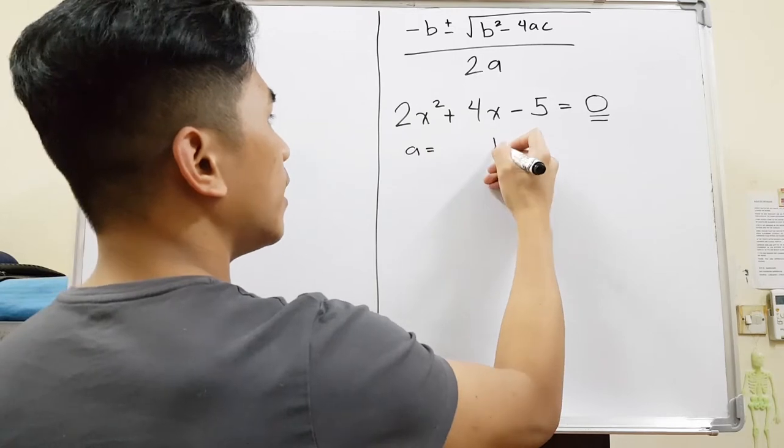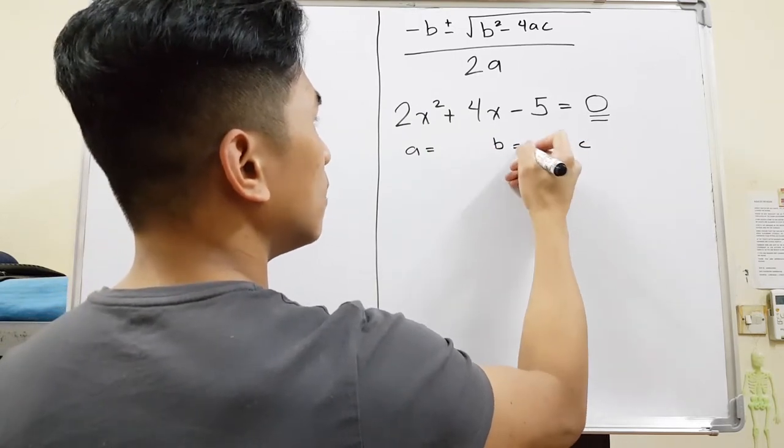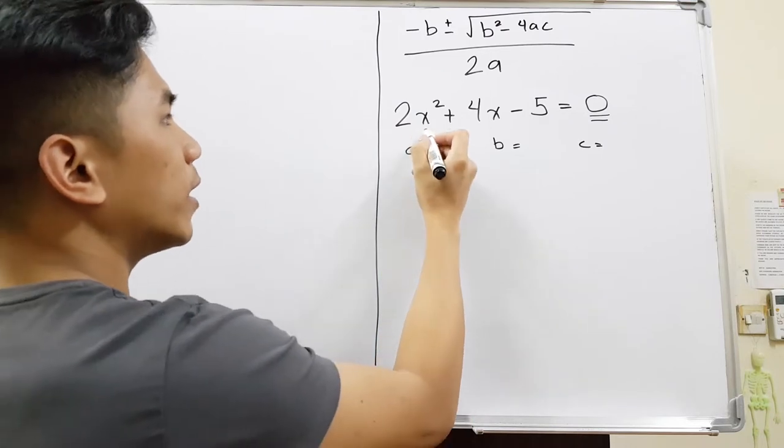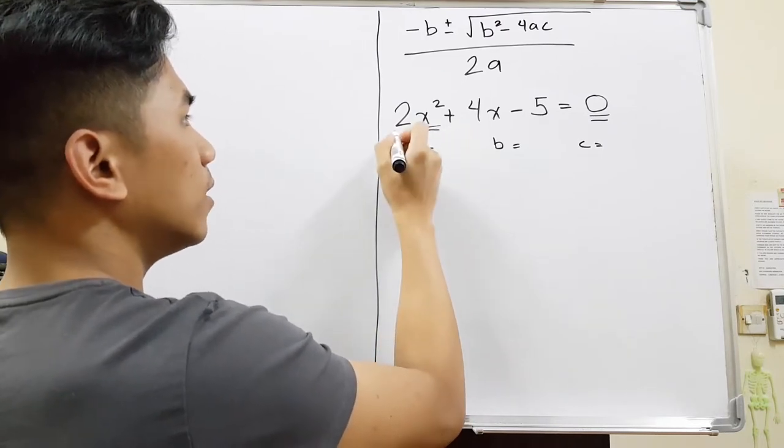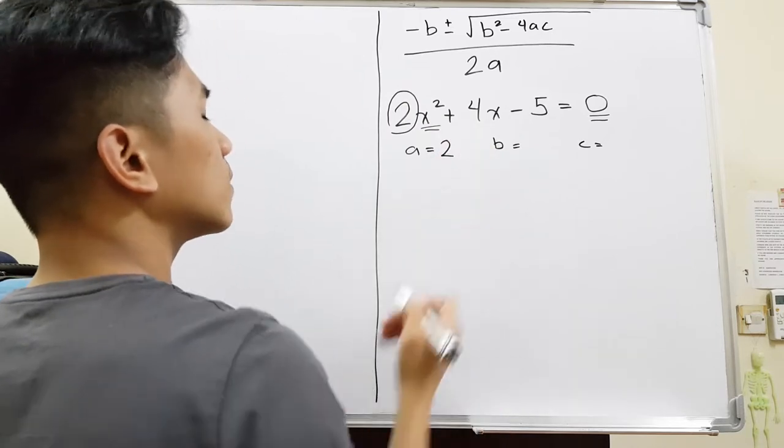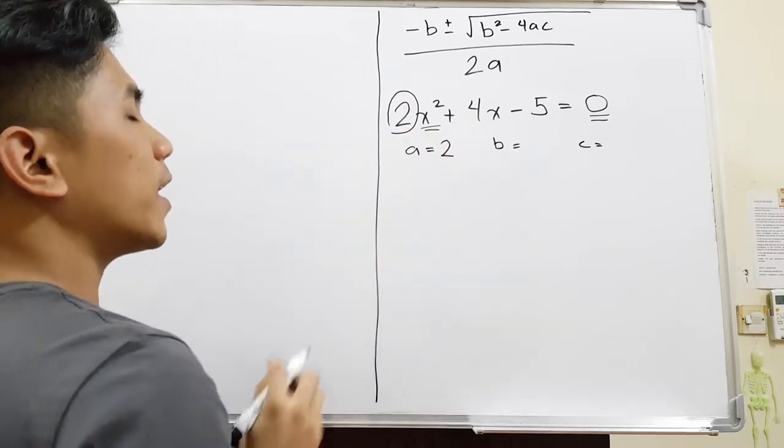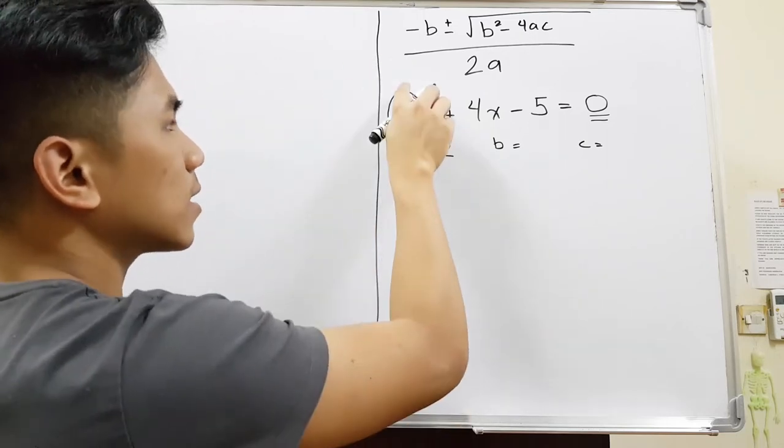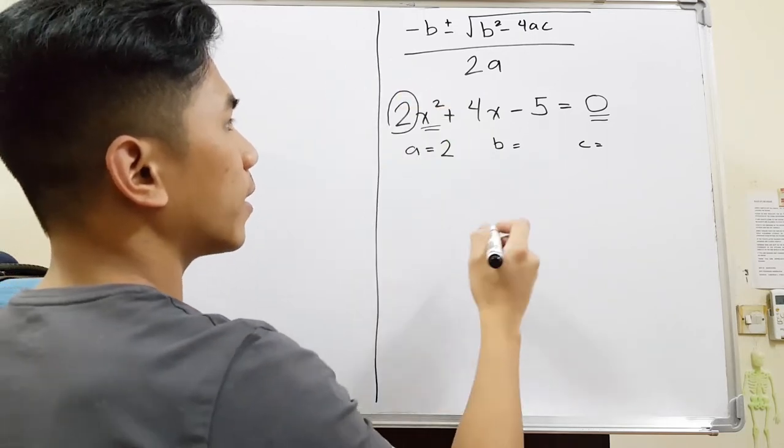Next, identify your A, your B, and C. A is the number before the x squared. So this is your x squared, this is your A, the number before it. For example, you don't see any number there, you just see x squared. It means the number is still 1. There is an imaginary 1 that you don't see.